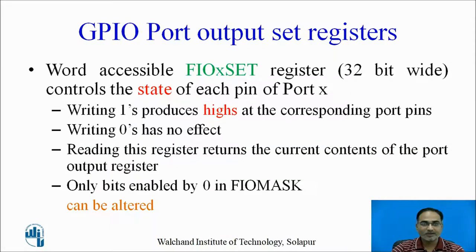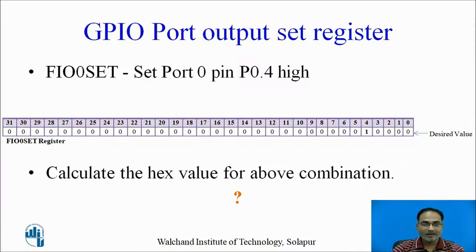This word-accessible FastIO set register controls the state of each port pin of port X. Writing 1 produces a logic high on the corresponding port pin. If you write 0 there is no effect on the output. Reading this register returns the current contents of the port register. Only the bits enabled by 0 in the mask register can be altered. Let us look at an example of how to use this register.